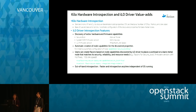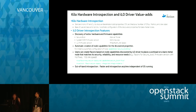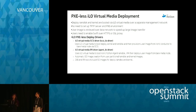The iLO driver automatically creates node properties for discovered capabilities, and users can create Nova flavors based on those capabilities to place workloads on bare metal nodes matching their security, reliability, and resource requirements. For example, you could create a flavor requiring secure boot, a flavor specifying a certain firmware version with needed hotfixes, or a flavor with a 10G network link for bandwidth-intensive workloads. The iLO driver does introspection out-of-band, meaning it doesn't need to boot up a RAM disk — discovery can be done at any time regardless of whether the OS is running, and it's faster.